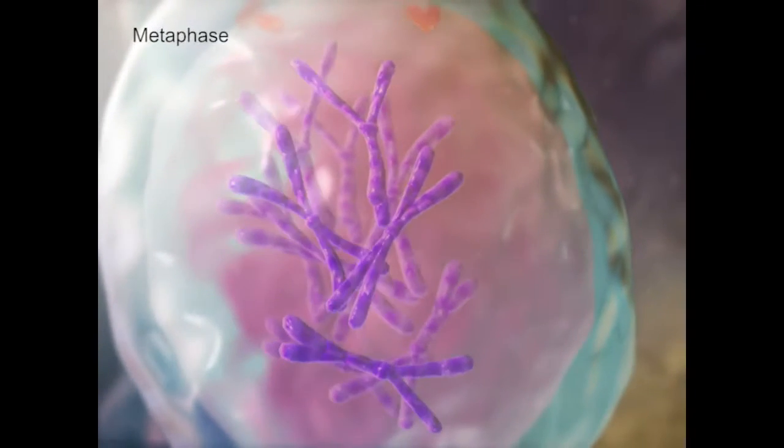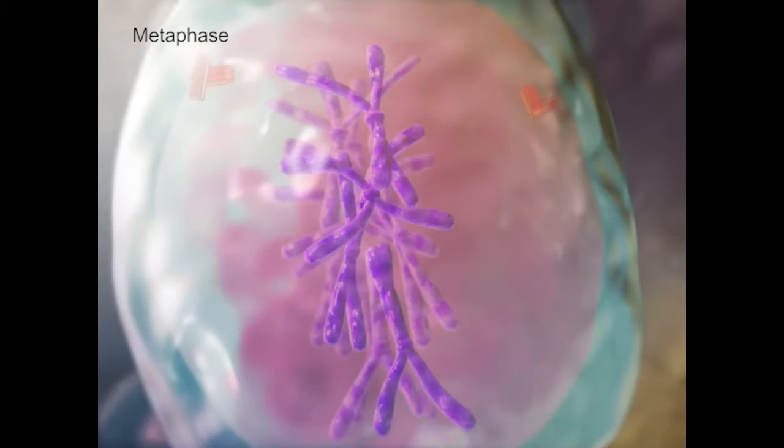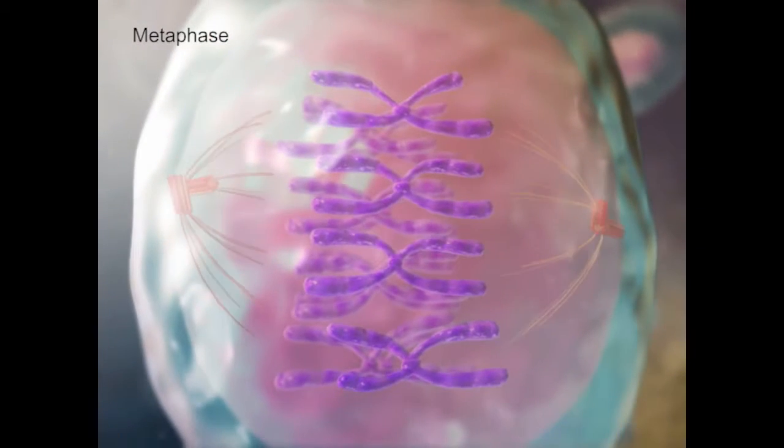In the next steps, spindle fibers attach to the centromeres, and the chromatids line up along the cell's midline.